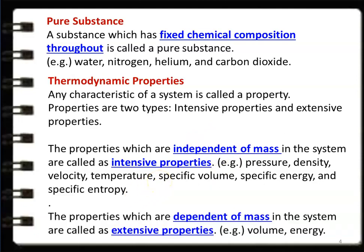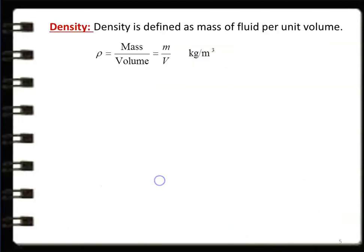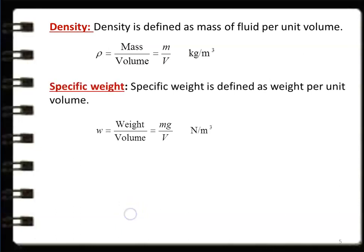Properties which are dependent on the mass of the system are called extensive properties. For example, volume and energy. Density is defined as mass per unit volume — mass divided by volume — in kilograms per meter cube. Specific weight is defined as weight per unit volume, which is mg divided by V, with unit newtons per meter cube.